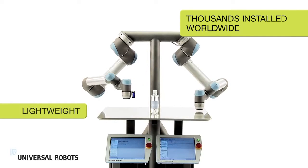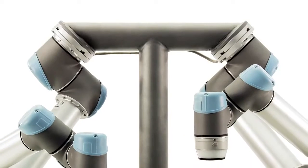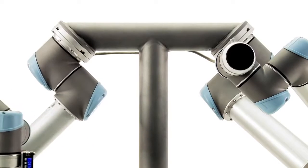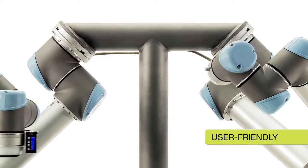Universal Robots has reinvented industrial robotics with lightweight, flexible robot arms. Tasks previously thought impossible to automate due to cost and complexity are now achievable with the user-friendly robots.